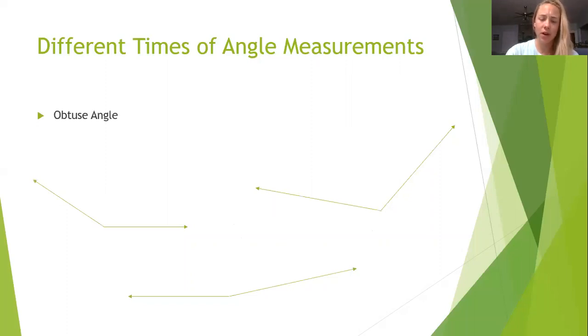Obtuse angles are bigger than a right angle. They're from 91 degrees to 179 degrees. So over here I have three obtuse angles. You can tell that they're much wider than the acute angles.